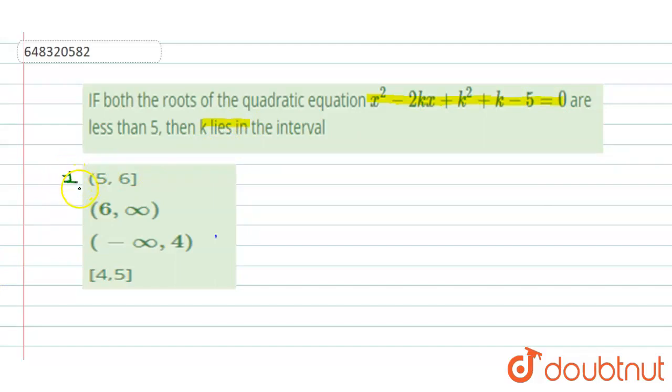First one is (5, 6), second is (6, infinity), third is (minus infinity, 4), and fourth is (4, 5).